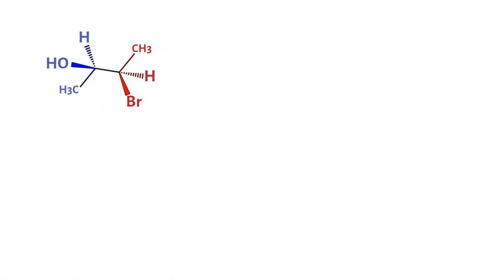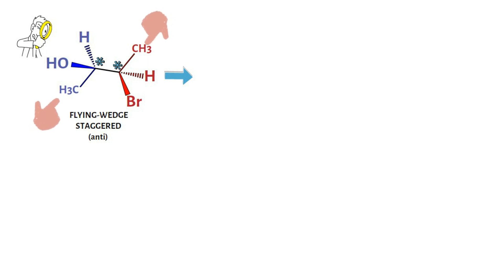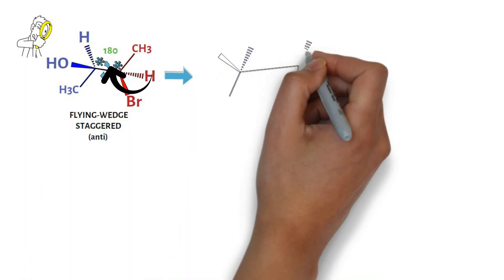Consider this flying wedge projection of a molecule having two chiral centers, which means both carbons are bonded to four different groups. Carefully notice that none of the bonds on one carbon eclipse any bond of the other carbon — therefore this flying wedge projection is staggered or anti. The simple way to confirm this is to check the orientation of groups in the plane of paper, here the blue and red methyl. They are pointing in opposite directions, so this is anti. Since Fischer projection is eclipsed, this staggered flying wedge projection must be rotated to make it eclipsed before converting.